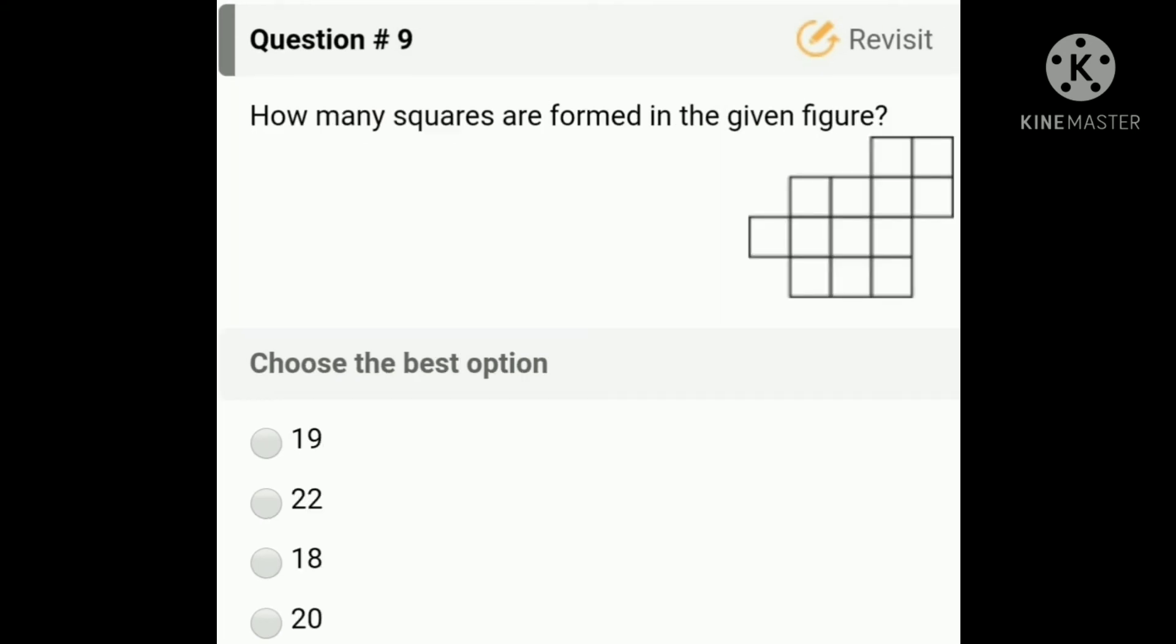The ninth question is: how many squares are formed in the given figure? If you look carefully, then you can see 19 squares in the given figure. So the correct option will be option A, 19. If you find any mistake in this video and the concept is not clear, then you can comment in the comment section, and I shall reply you.